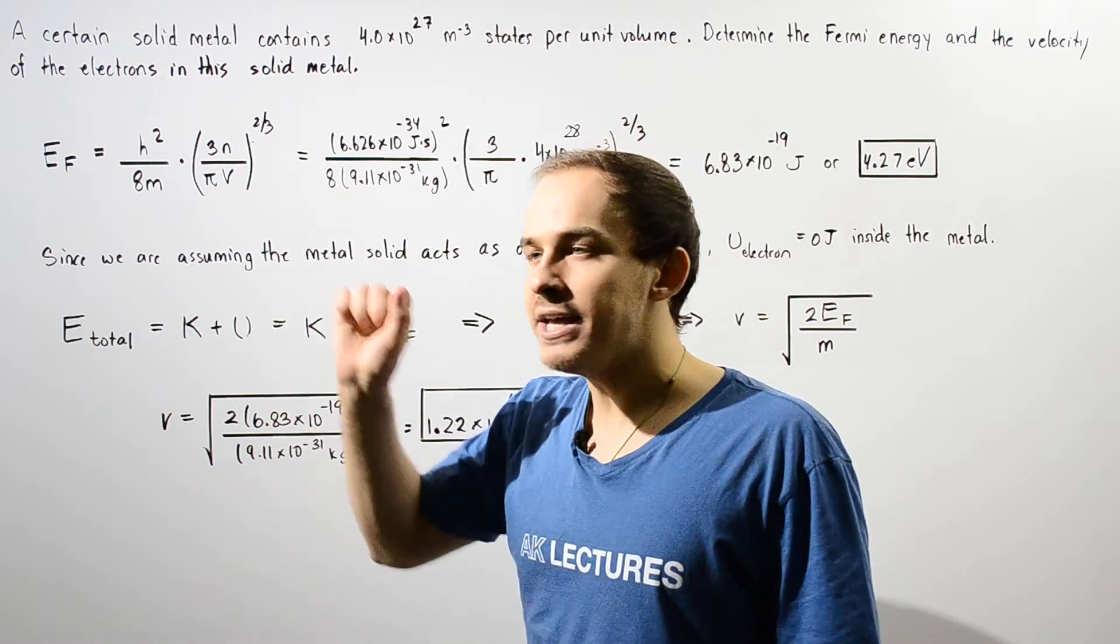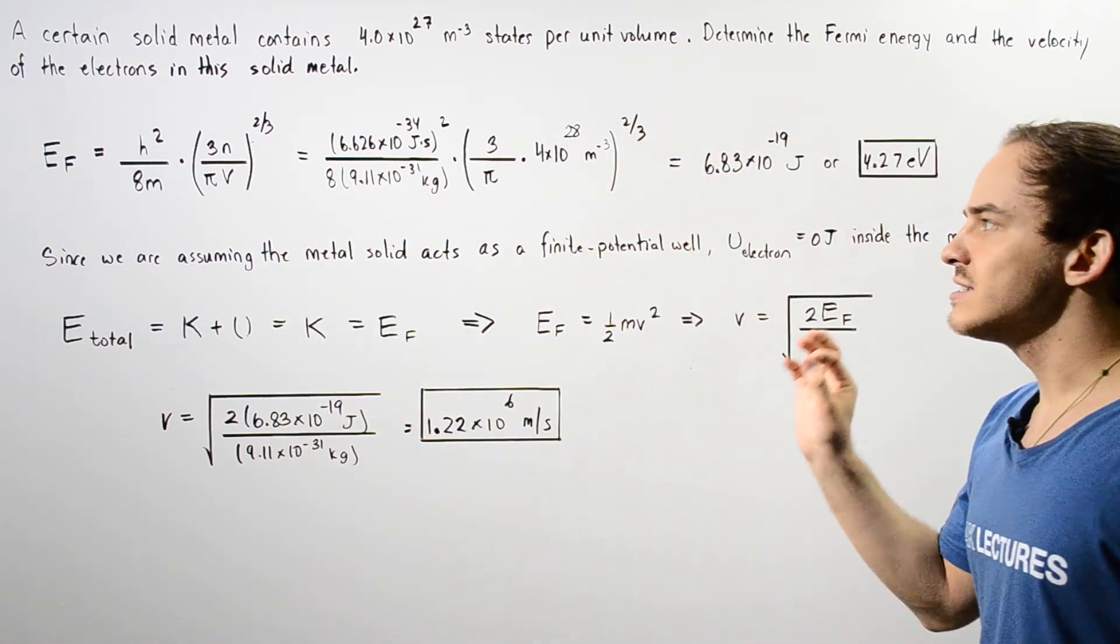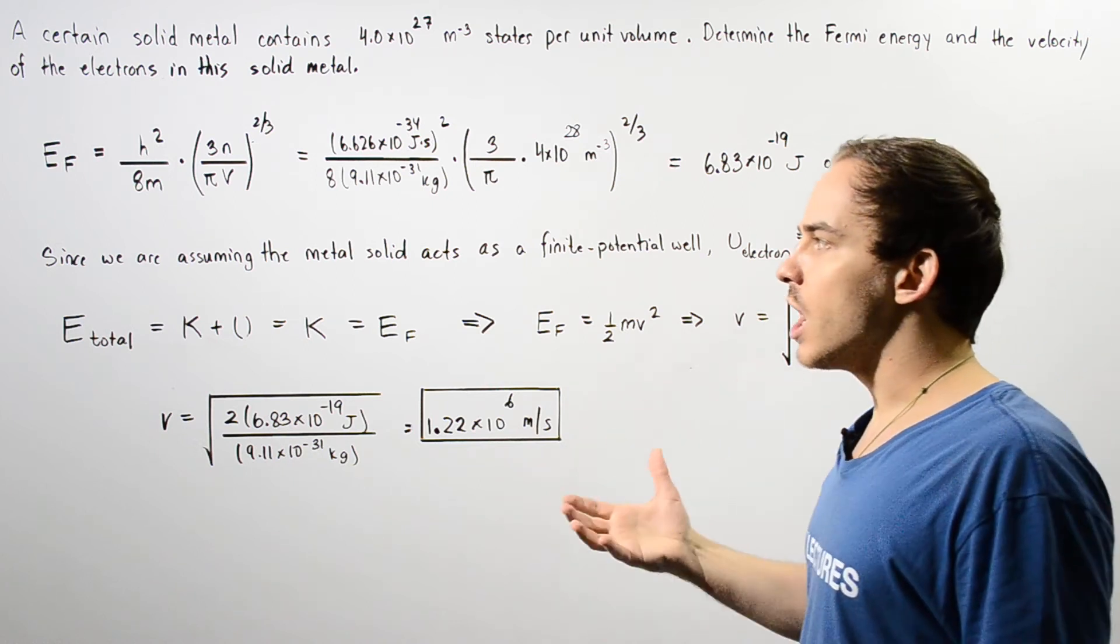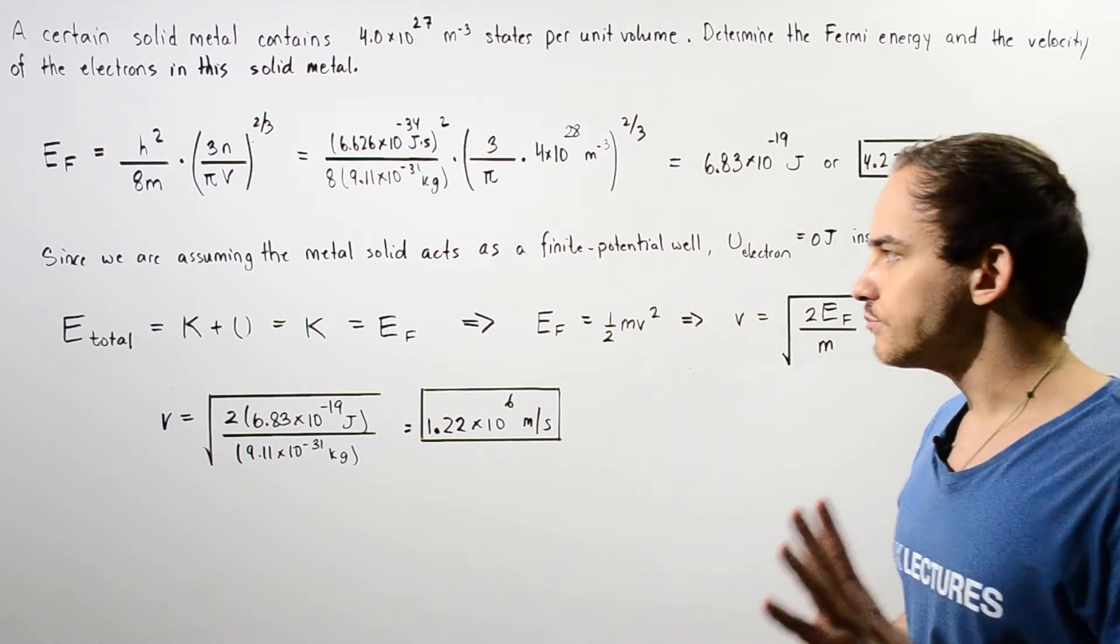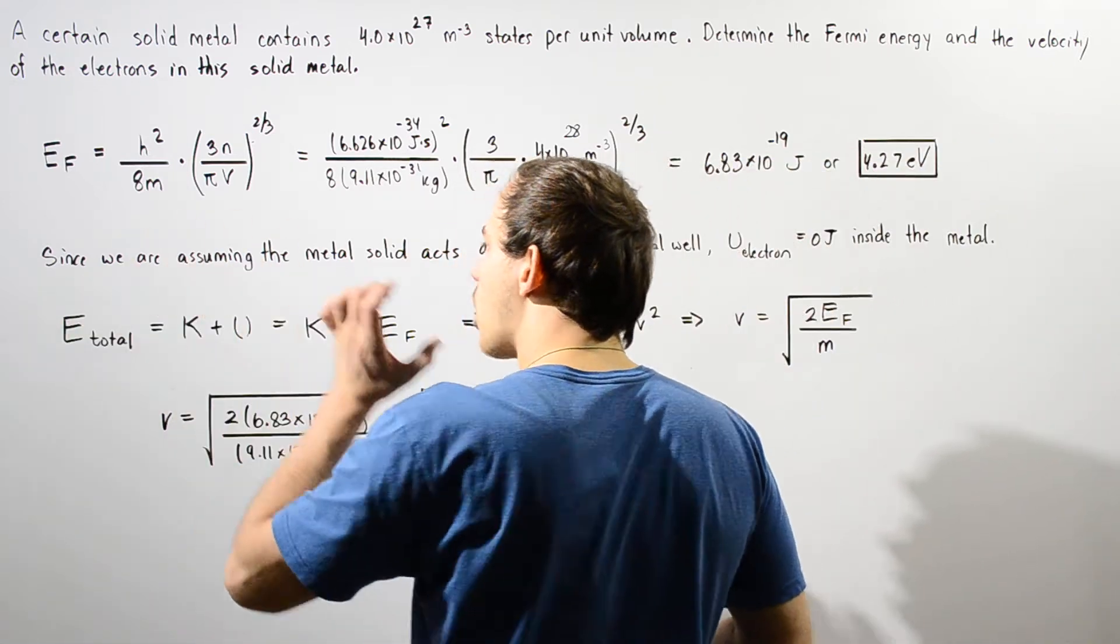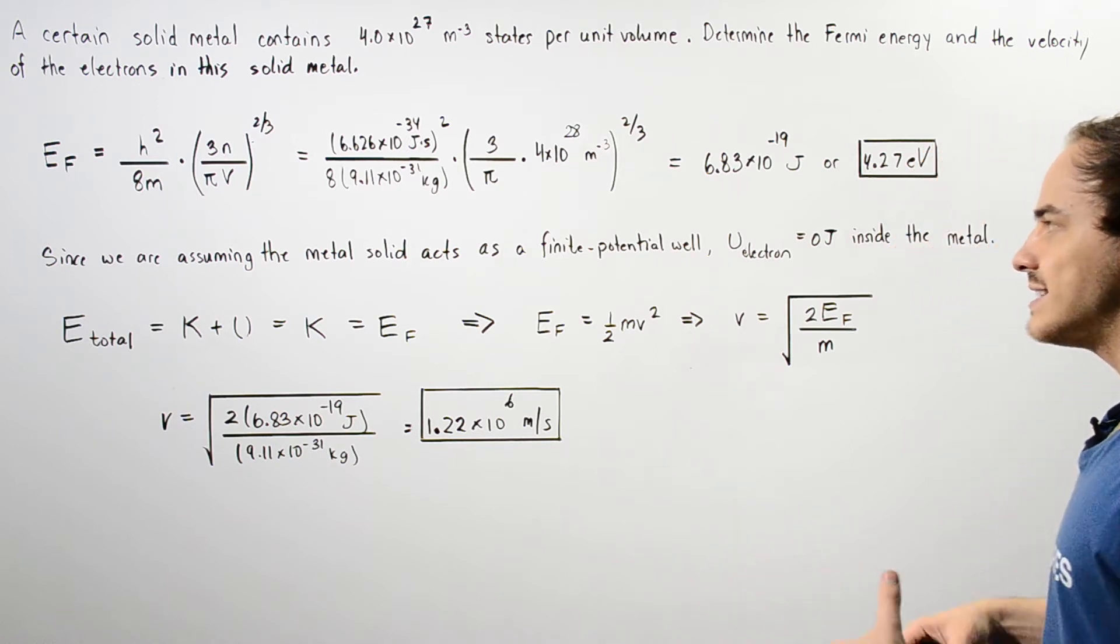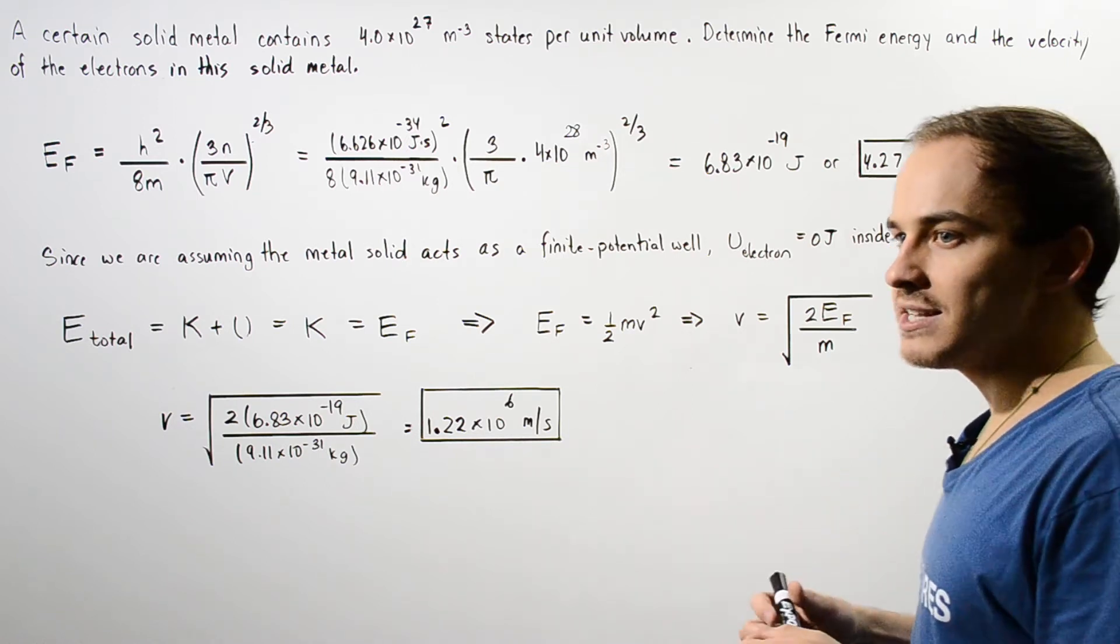Since we are assuming that the solid metal acts as a finite potential well, as a rigid box, that basically means whenever our electrons are found inside that metal or on the surface of the metal, our quantity of potential energy of that electron is zero joules.